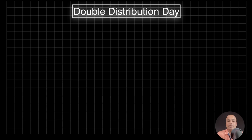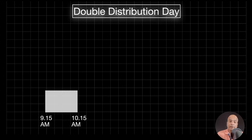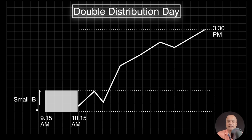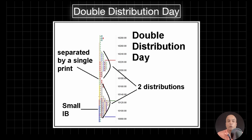A double distribution day also starts with a small IB and price extends more than two times the IB range — similar to a trend day. The difference is that in a double distribution day there is an explosive move in the second half, and in a market profile chart the range is separated by a single print with two bell curves — two distribution curves separated by a single print. If you can't understand the market profile chart, it's fine — you can consider a double distribution day as a trend day itself.